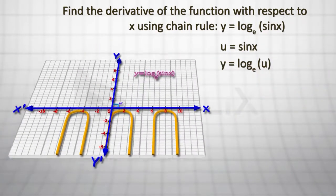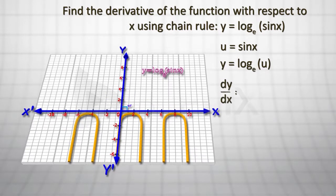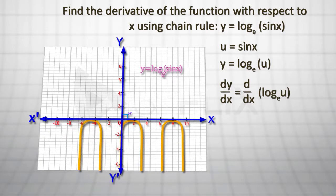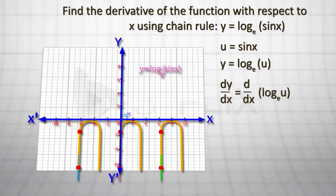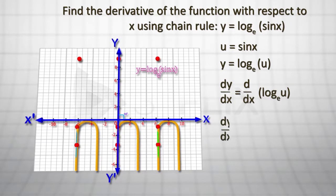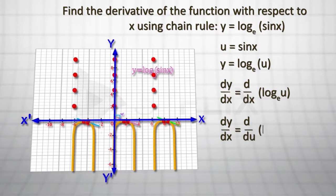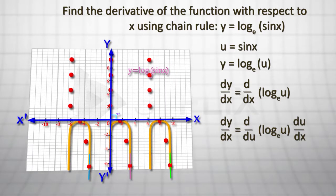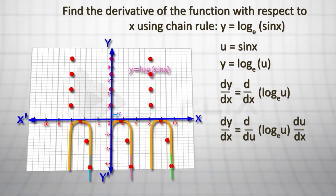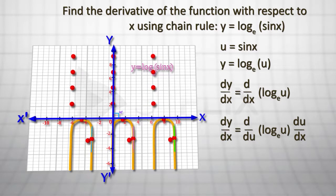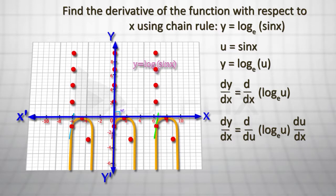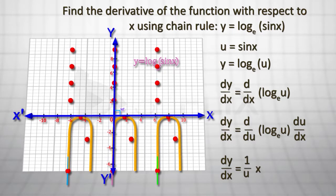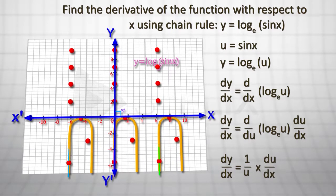To find dy by dx, dy by dx is equal to d by dx of log u to the base e. Now, multiplying and dividing by du, we get dy by dx is equal to d by du of log u to the base e multiplied by du by dx. Then, dy by dx is equal to 1 by u multiplied by du by dx.